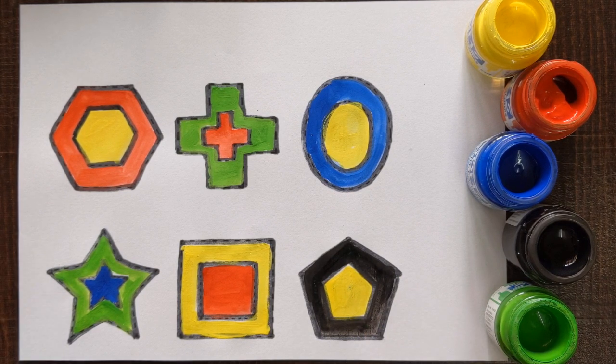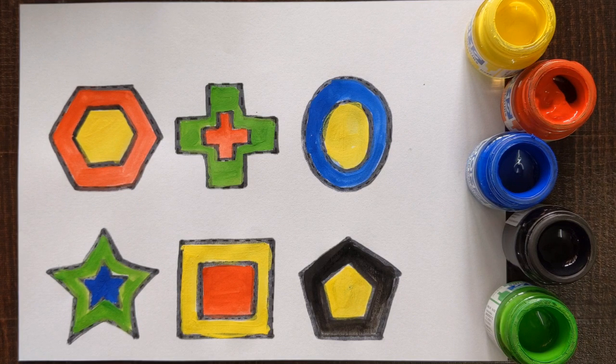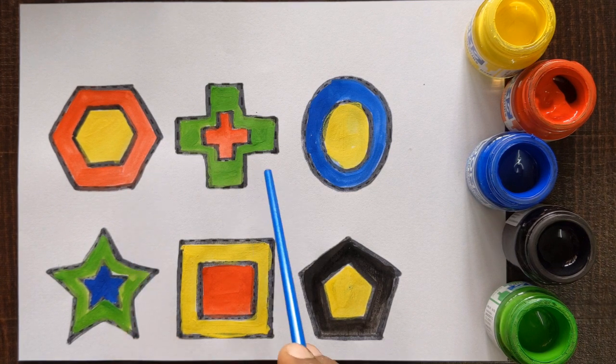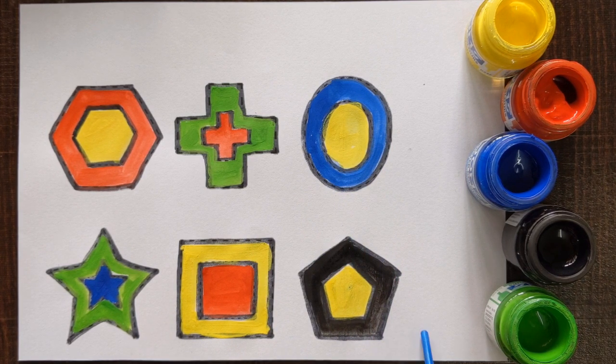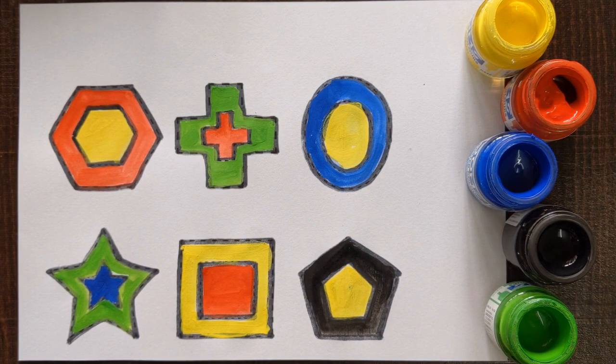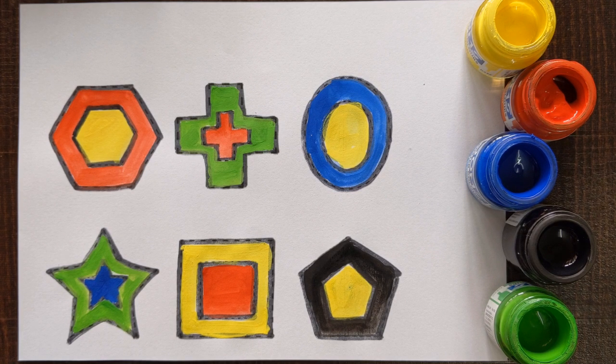Wow, our shapes are looking so colorful. Let's revise with me. Hexagon, cross, oval, star, square, and pentagon. Hey guys, if you like the video, don't forget to subscribe, like, and share. Thank you.